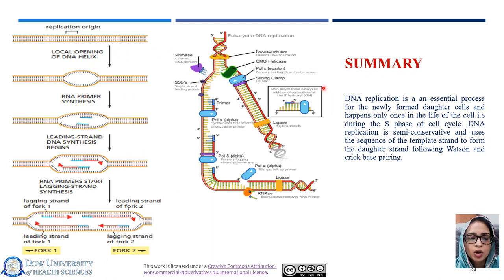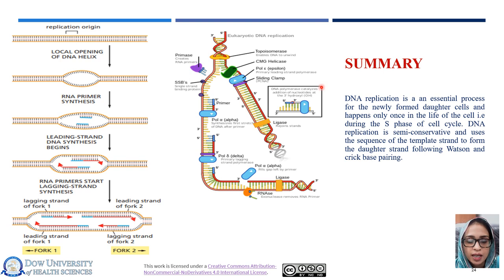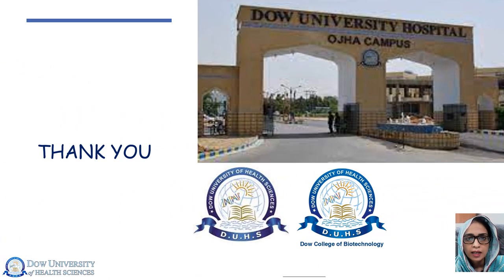To summarize the concept of DNA replication: it is a well-conserved process essential for the survival of every living cell, whether prokaryotes or eukaryotes. It results in the formation of daughter duplex DNA and happens only once in the life of the cell — in the S phase of the cell cycle. DNA replication is a semi-conservative process carried forward by DNA polymerase with essential proofreading activity, following Watson and Crick base pairing. Thank you, students — that concludes the well-conserved process of DNA replication. I will be happy to answer any further queries.